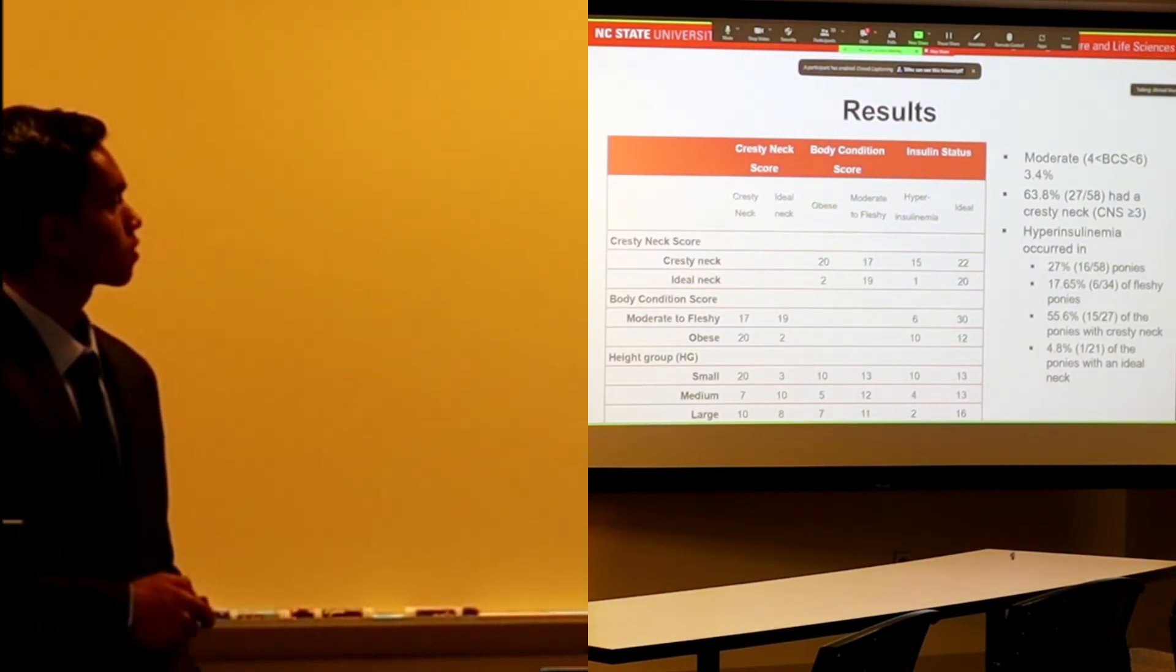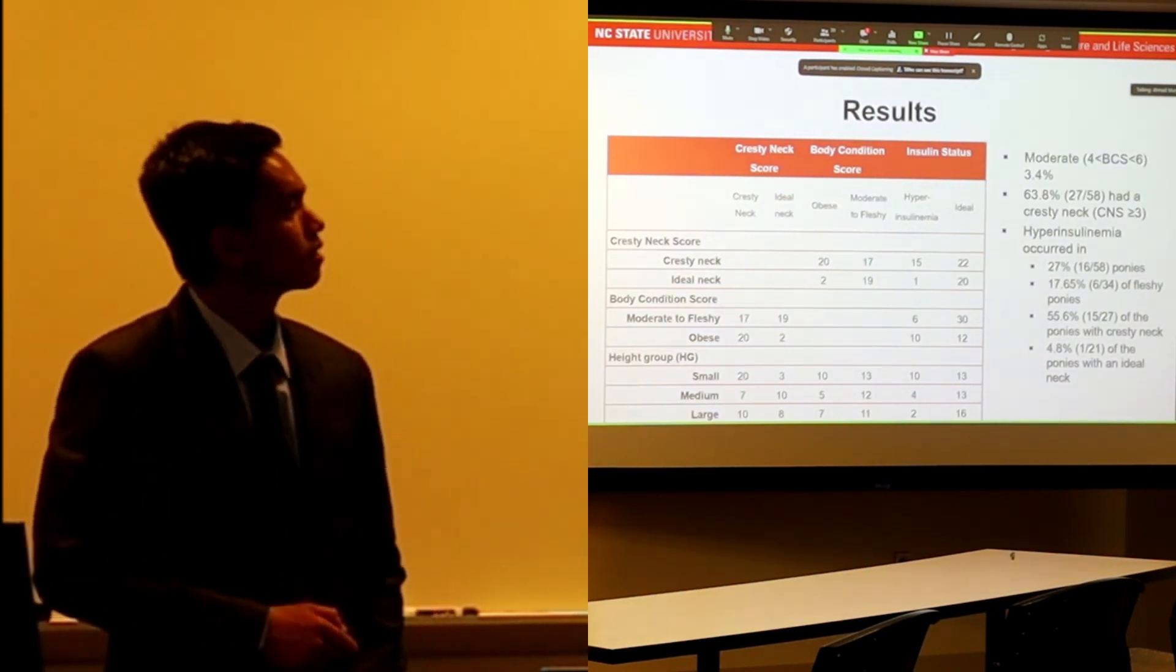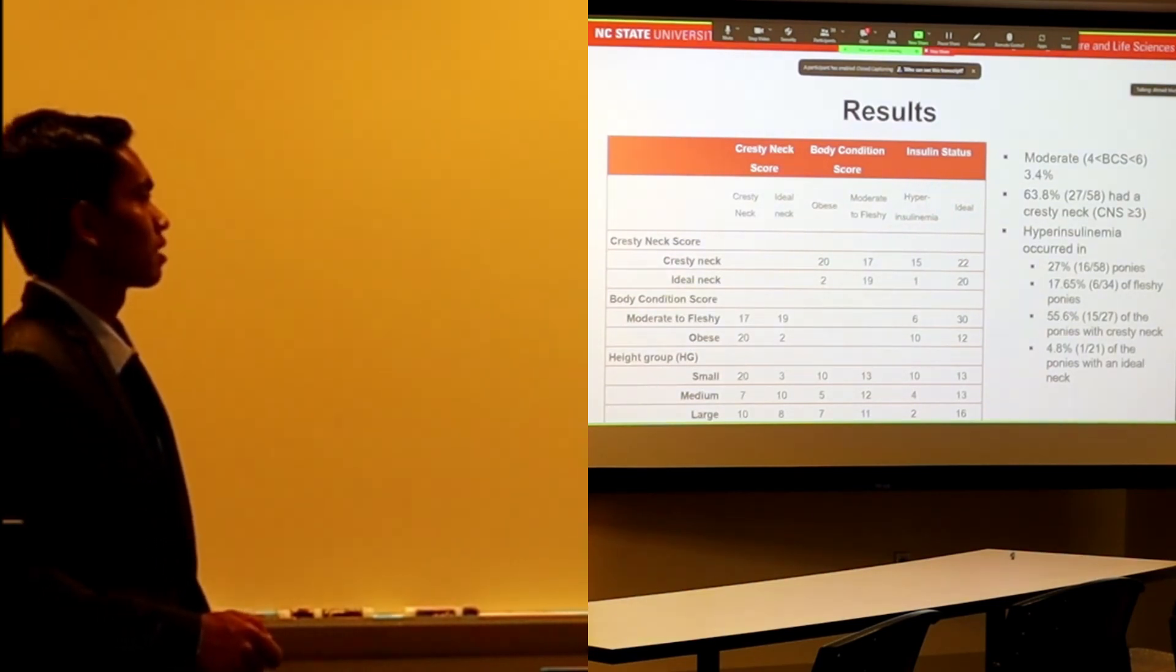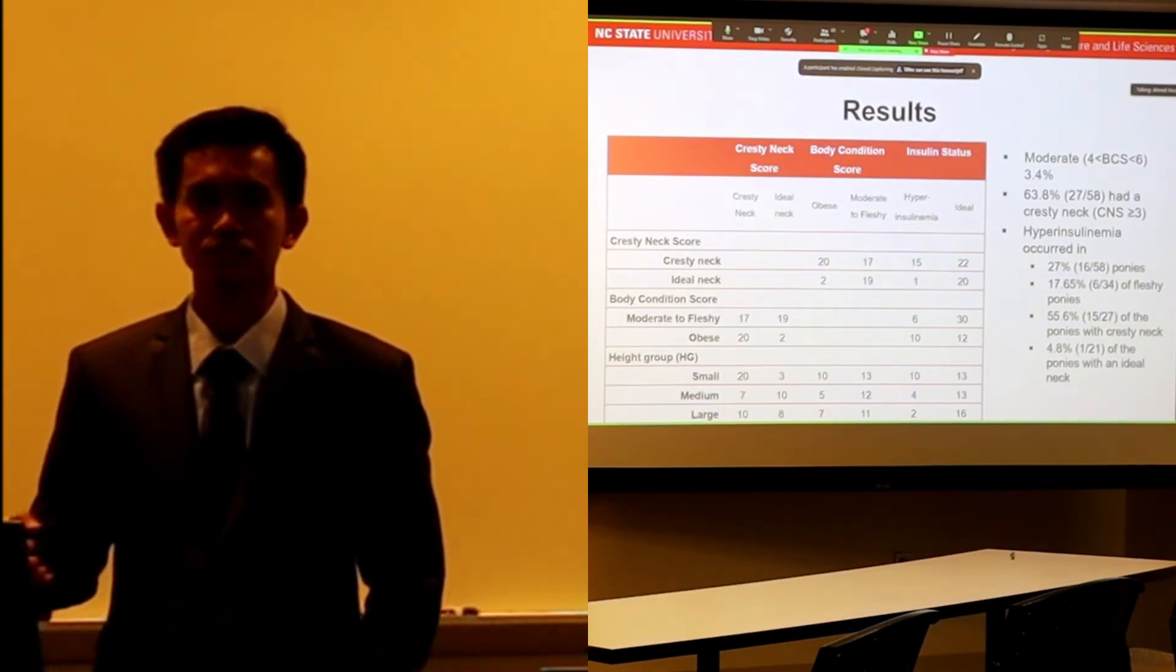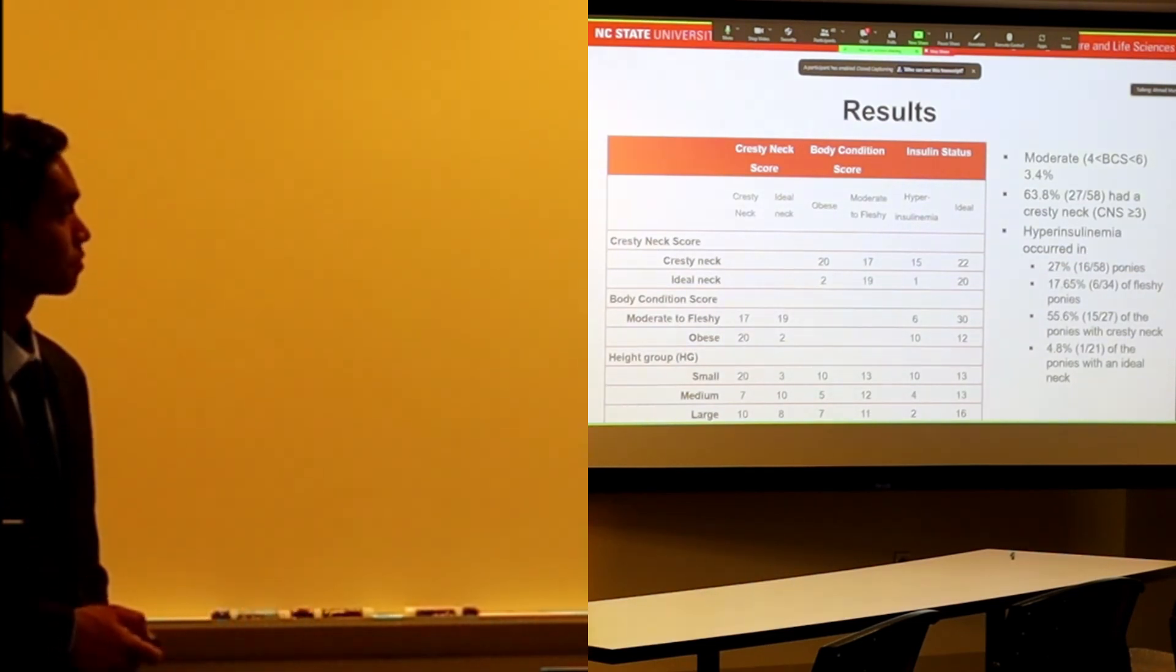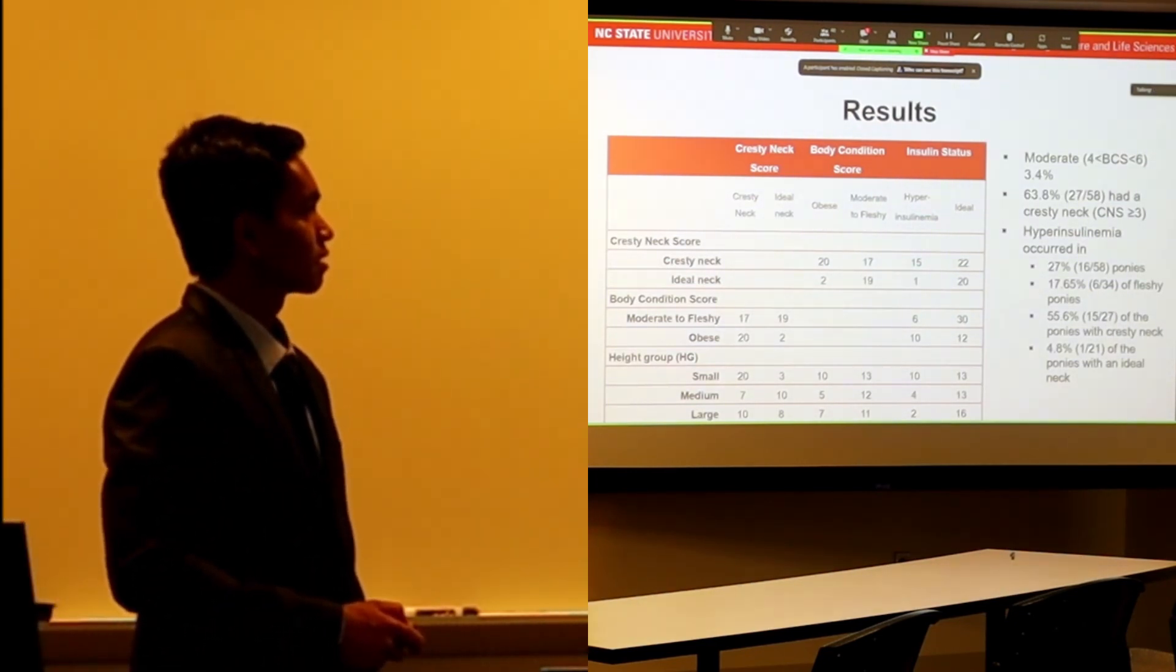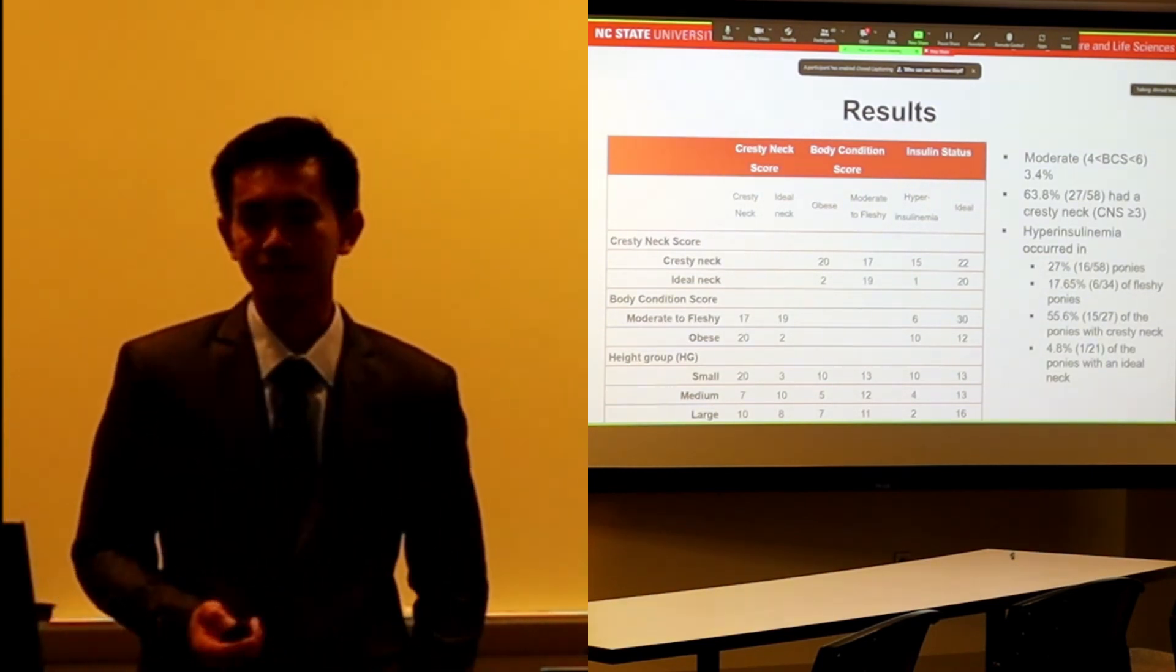For horses with cresty neck versus ideal neck, we looked at the number that are hyperinsulinemic. Hyperinsulinemia is a state when they have insulin levels higher than normal range. For ponies with cresty neck, hyperinsulinemic ponies were 15 versus 22 ideal.